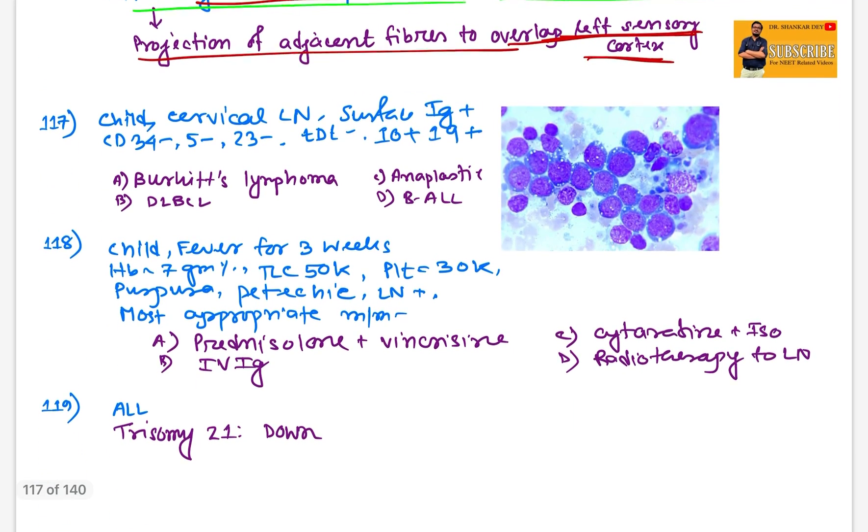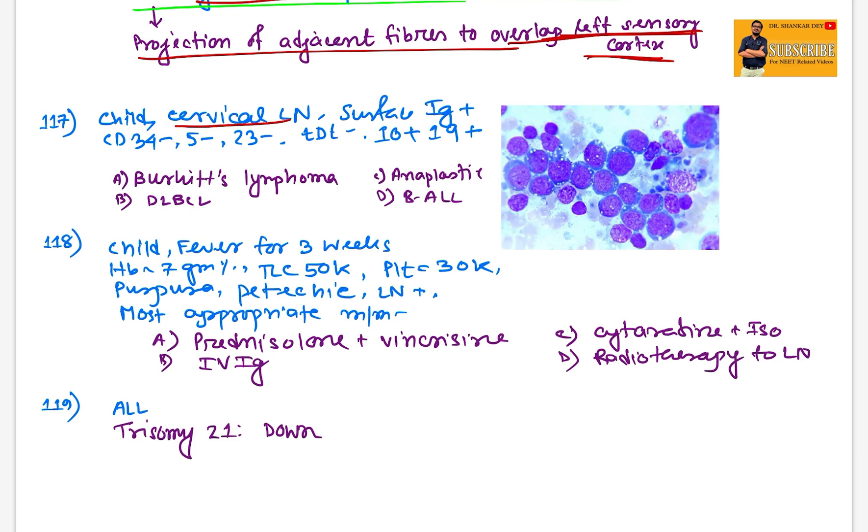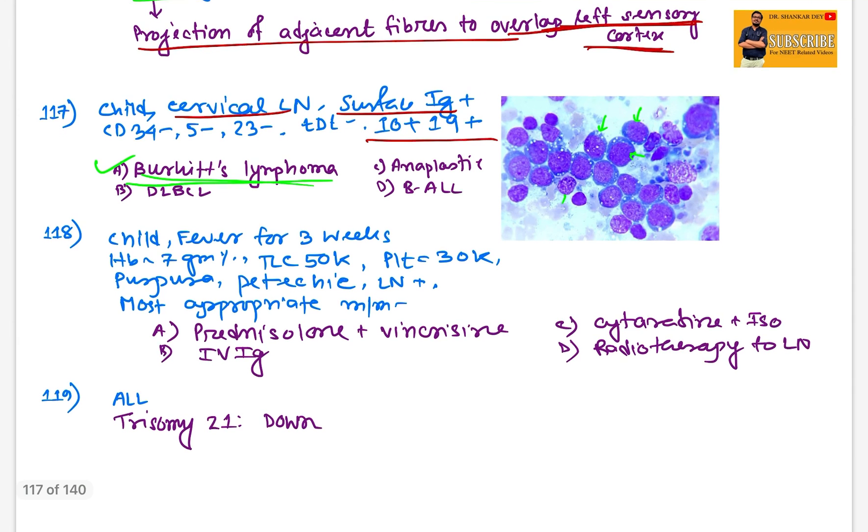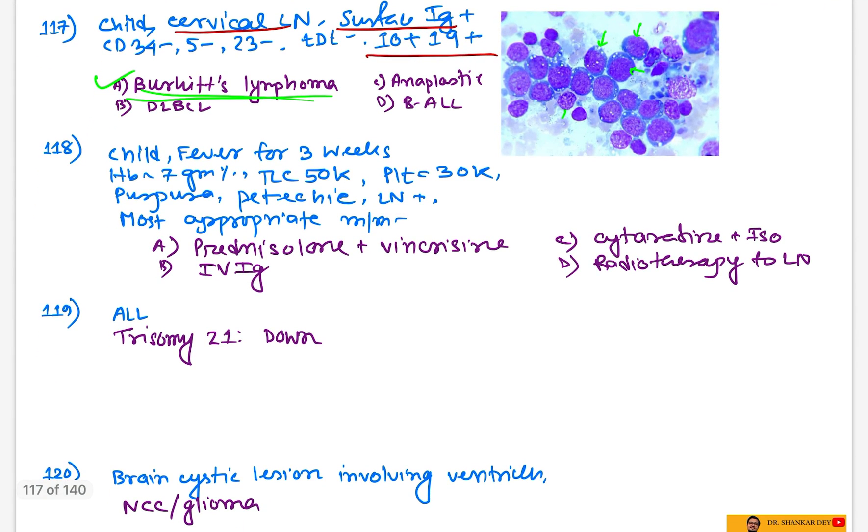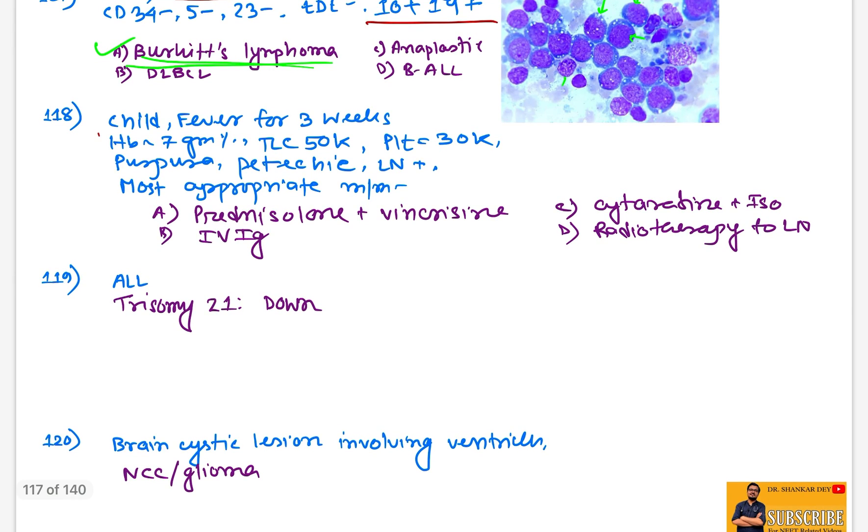Question 117: Child with cervical lymph nodes, surface IgG positive, CD10 plus, CD19 plus positive, showing multiple cytoplasmic vacuoles around the nucleus. This is a case of Burkitt's lymphoma. Question 118: Child having fever for three weeks with decreased hemoglobin, increased TLC around 50,000, platelet also decreased, petechiae purpura plus - probably this is a case of acute leukemia, ALL.